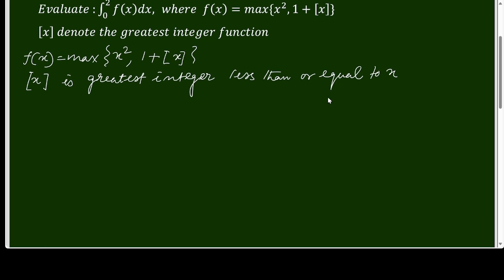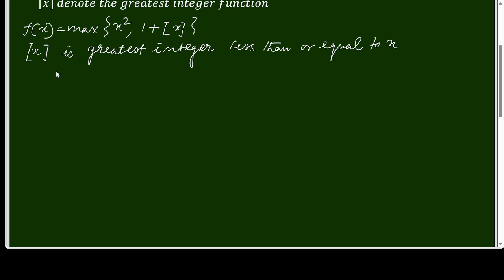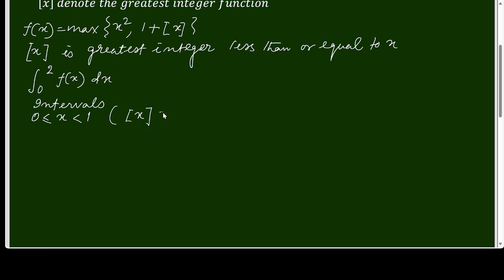Then we have to break it into intervals. The integral is from 0 to 2 of f(x) dx. The first interval is 0 to 1, meaning x is greater than or equal to 0 and less than 1, so the greatest integer function value equals 0. The second interval is 1 to 2, where the floor function takes the value 1.